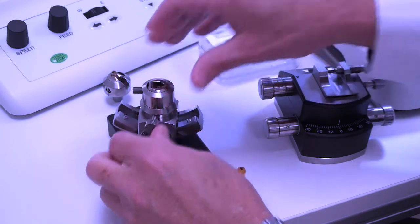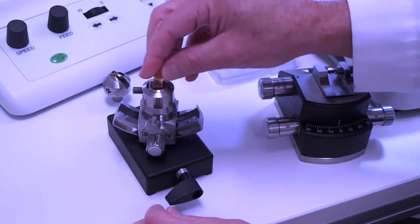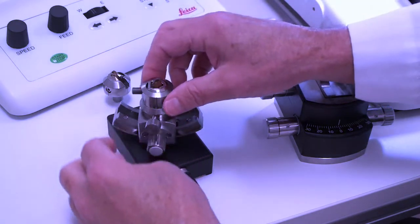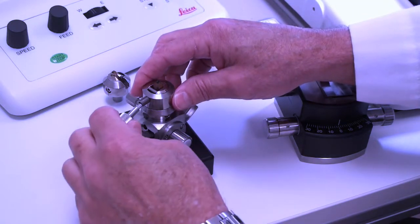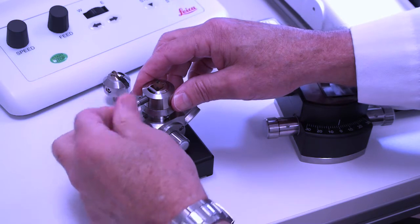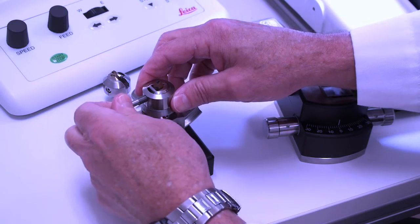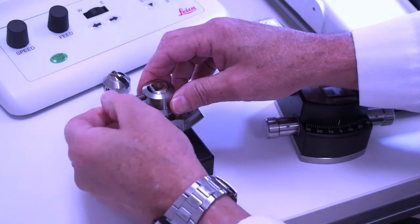And when we tighten these, you want to make sure things are nice and tight. I'm going to put my sample in and using the same Allen wrench key, I'm going to tighten that up. And again, you want to make sure that your sample's nice and tight so it doesn't wiggle around.